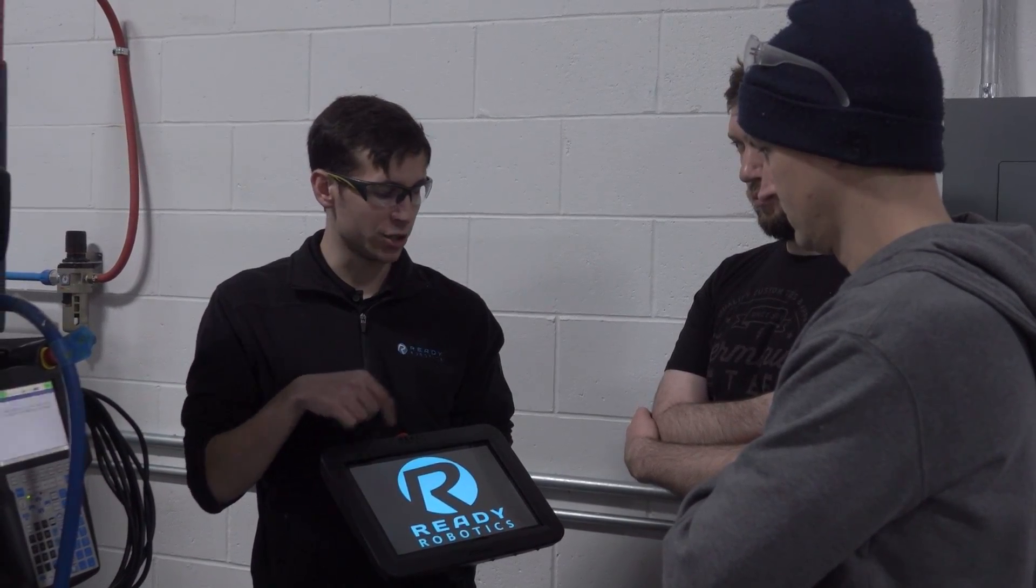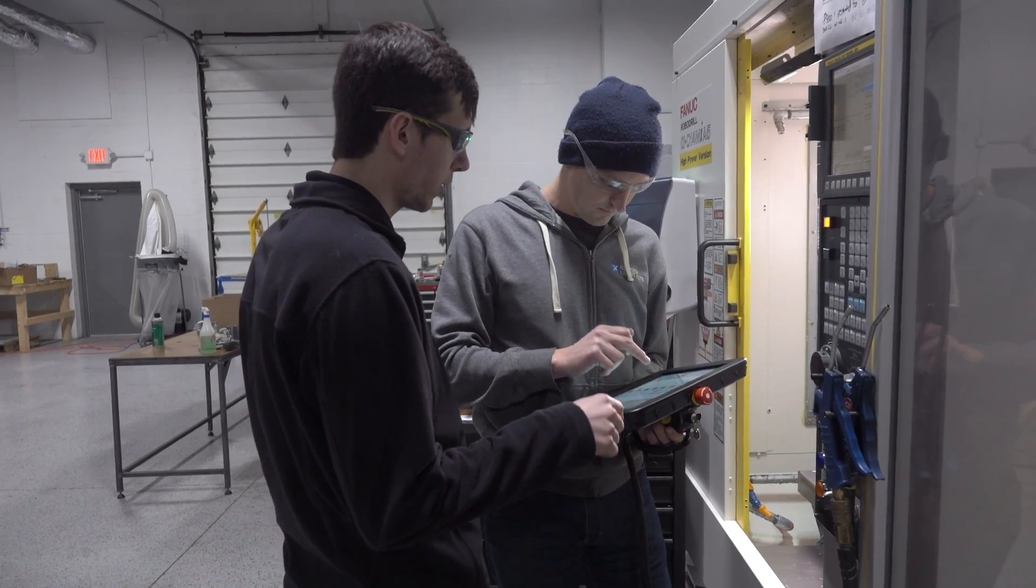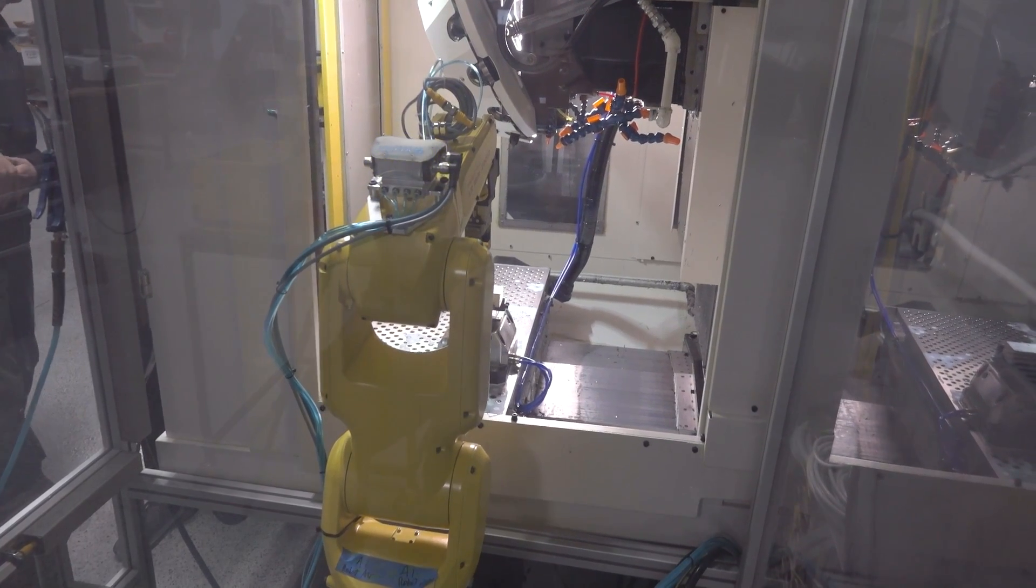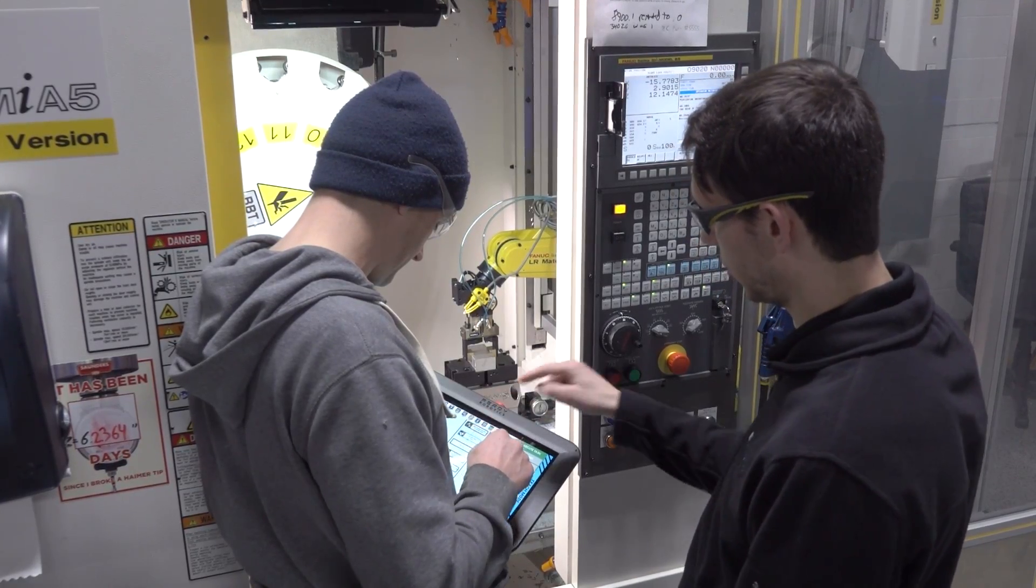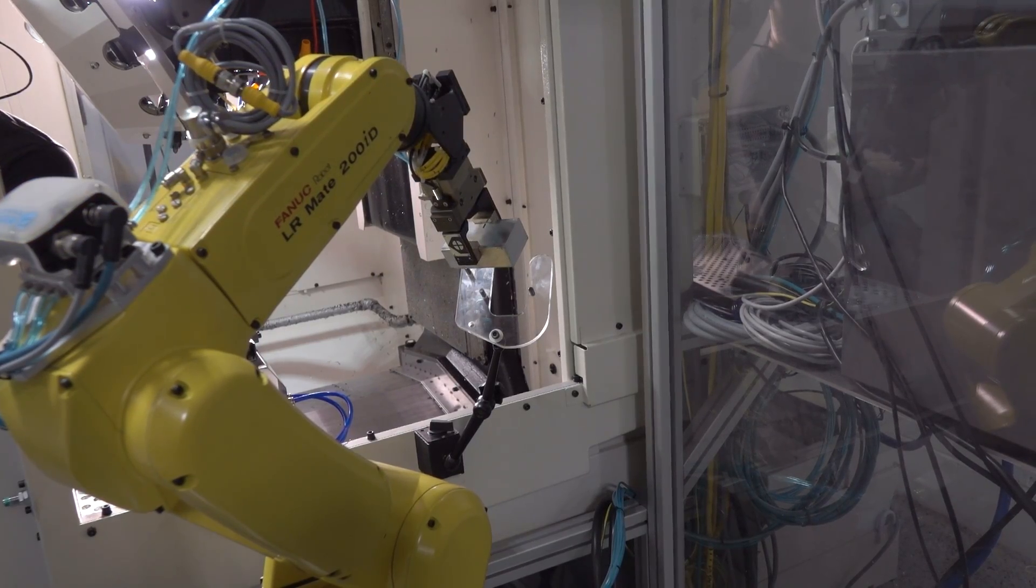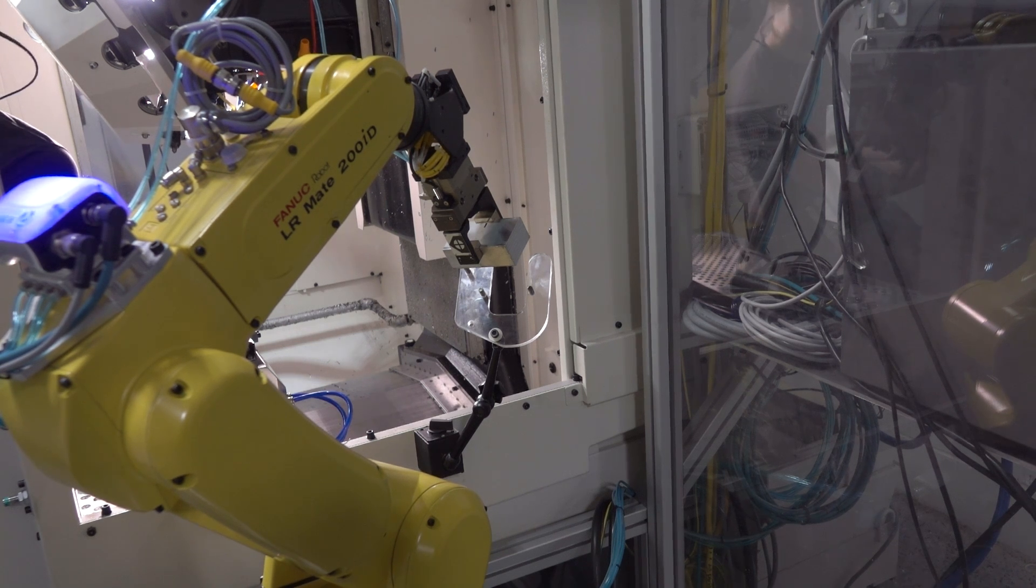All that being said, we have ended up not using the robot because this educational cell system only allows the robot to reach maybe six inches into the work area, which is not an ideal situation at the moment for the kind of parts we're running.